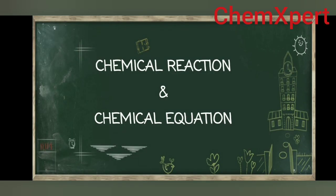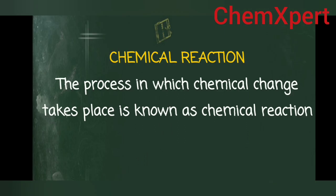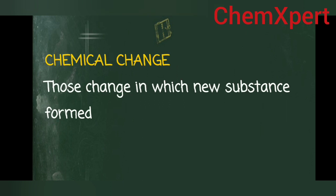Today we are going to show you the video we discuss in science class — strengths chapter 1, chemical reactions and equations. The process in which chemical change takes place is called a chemical reaction. Now the question arises: what is chemical change? Chemical change refers to changes in which a new substance is formed.